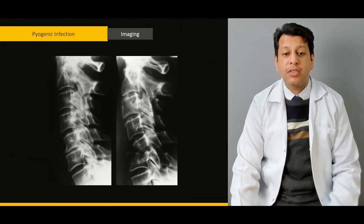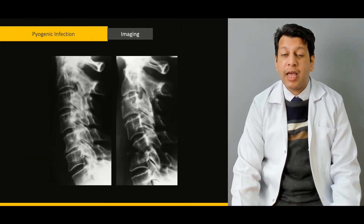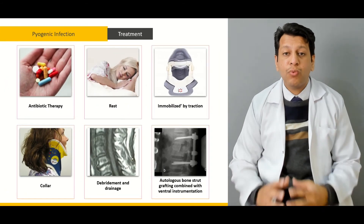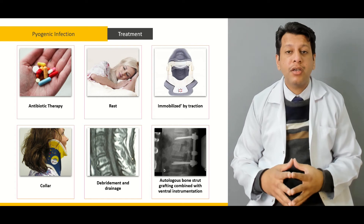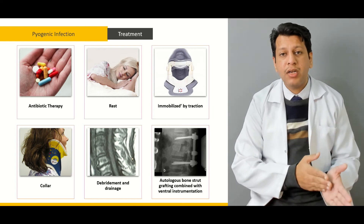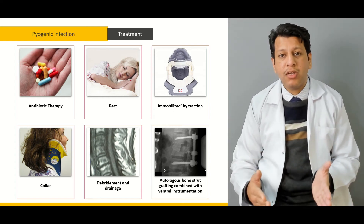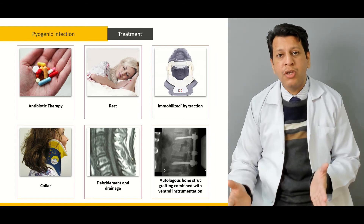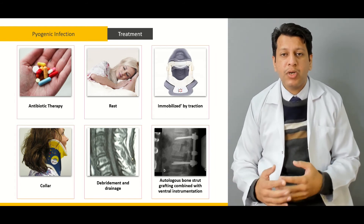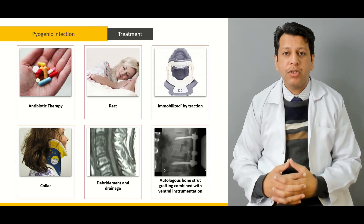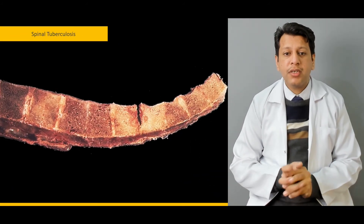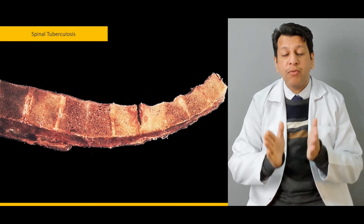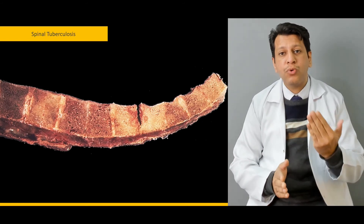We will briefly discuss what we see on X-rays and MRI and how we differentiate them, and then what is the treatment of pyogenic infection — starting from antibiotic therapy to conservative measures to the surgical options. We will discuss these options one by one and how to proceed with a patient with pyogenic infection.